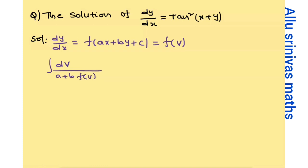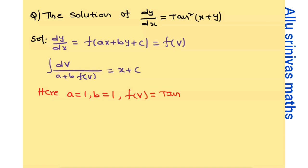This is the super trick shortcut. So you could compare and find the a value. Here, tan squared of (x plus y) — we identify a equals 1 and b equals 1. Then f of v comes out as tan squared v. So with a equals 1 and b equals 1 and f of v equals tan squared v, if we do substitution and simplification, we will get the answer.